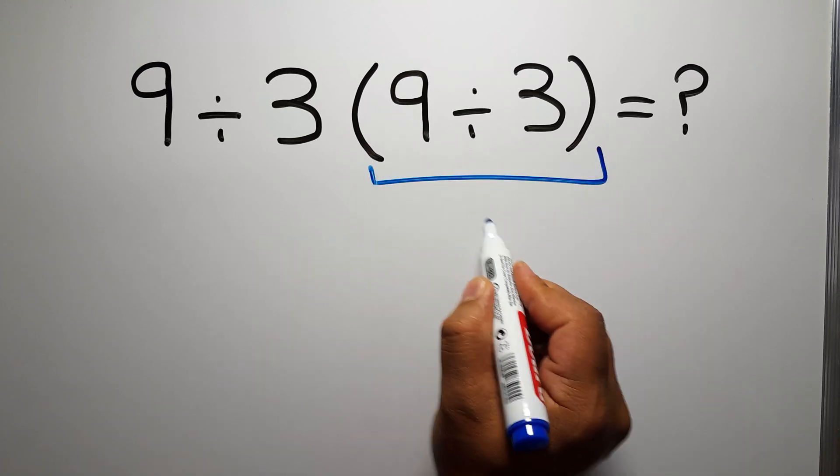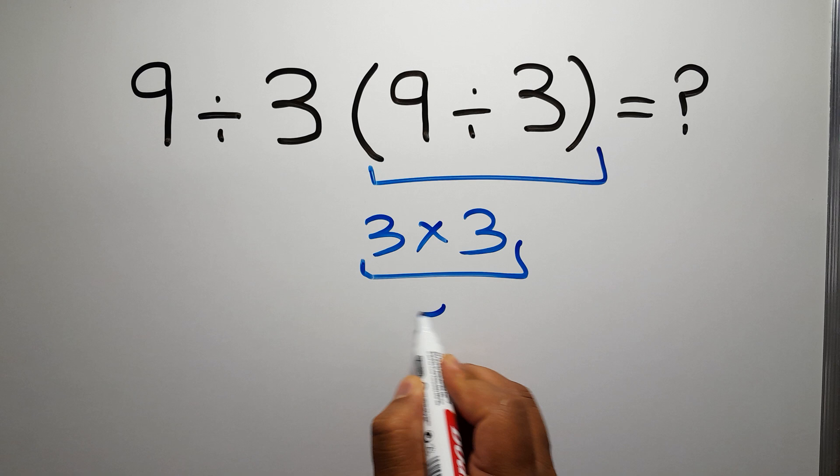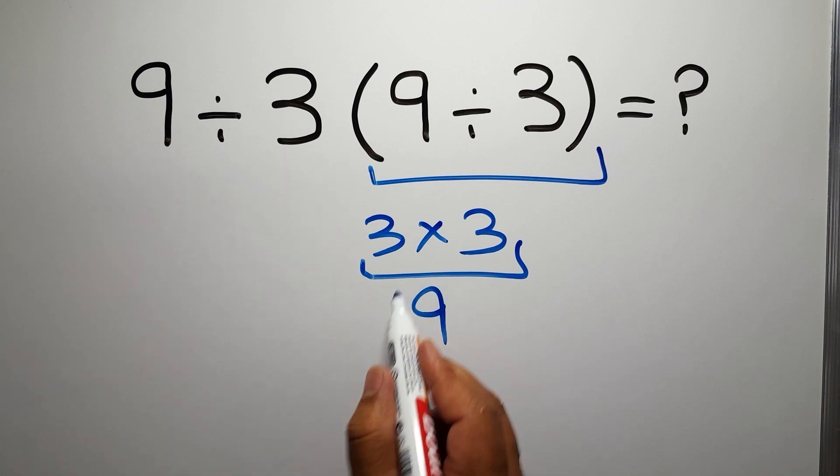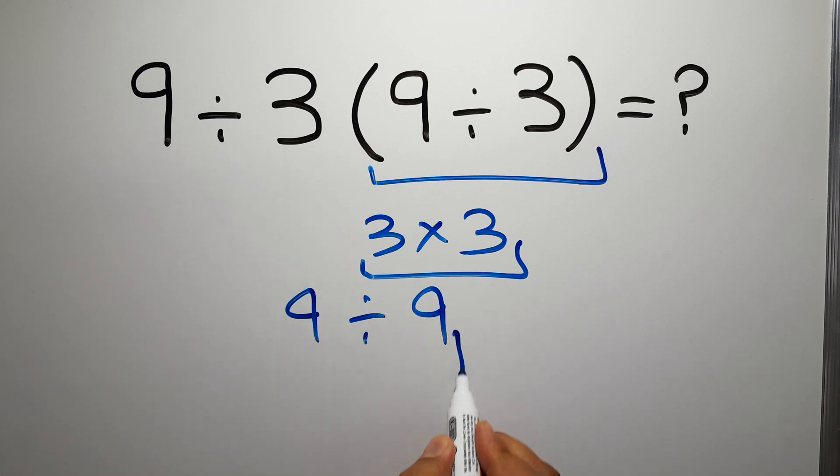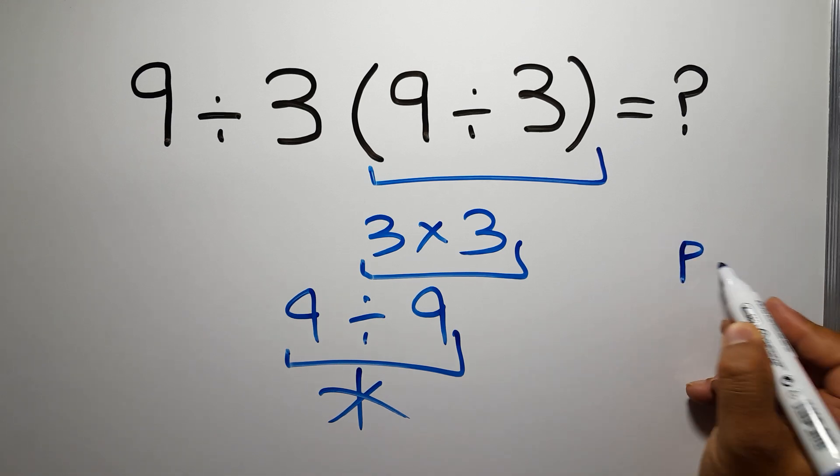9 divided by 3 gives us 3, and 3 times 3 gives us 9, so 9 divided by 9 equals 1. But this answer is not correct because according to the order of operations, first we have to do parentheses.